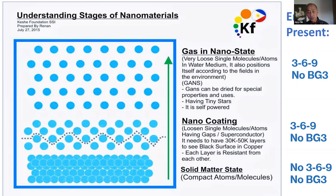You may not be aware of the term BG3 or the 3-6-9 energy. In one of my series of talks I gave a definition: 3-6-9 is a subtle energy. BG3 is another subtle energy. Solid matter does not have that energy. The nano coating matter does have the 3-6-9 energy. The GANs — gas in the nano state — has no BG3, but it does have the 3-6-9 energy.